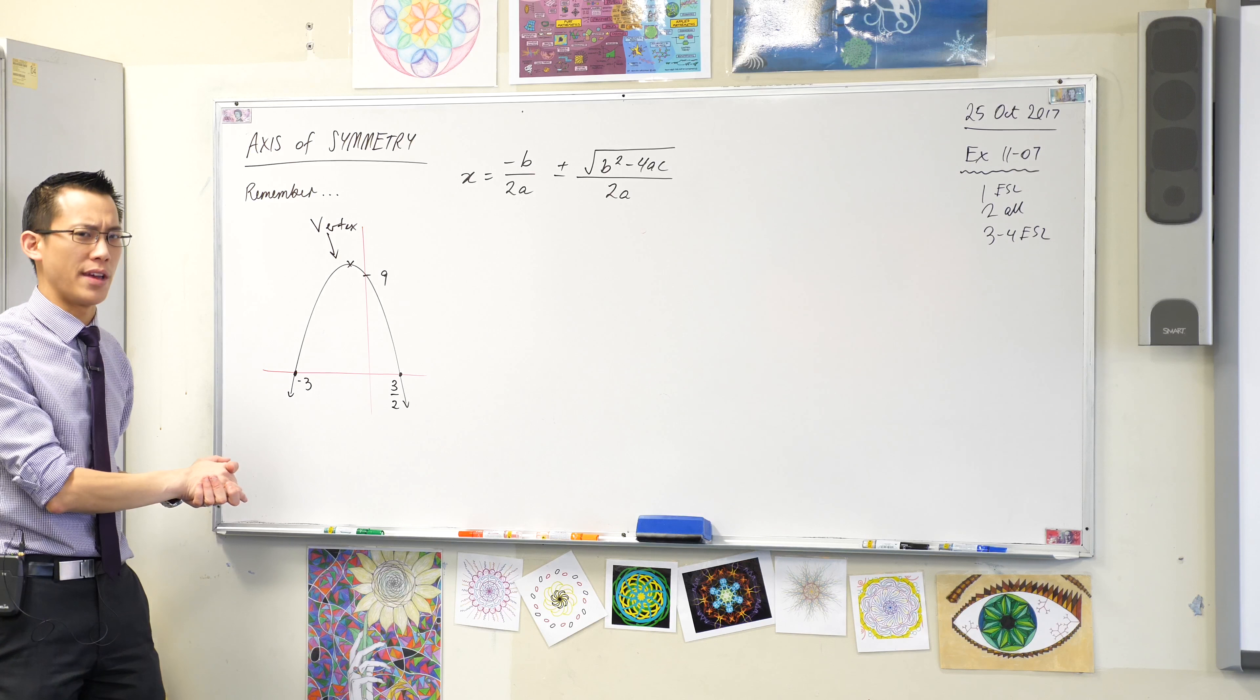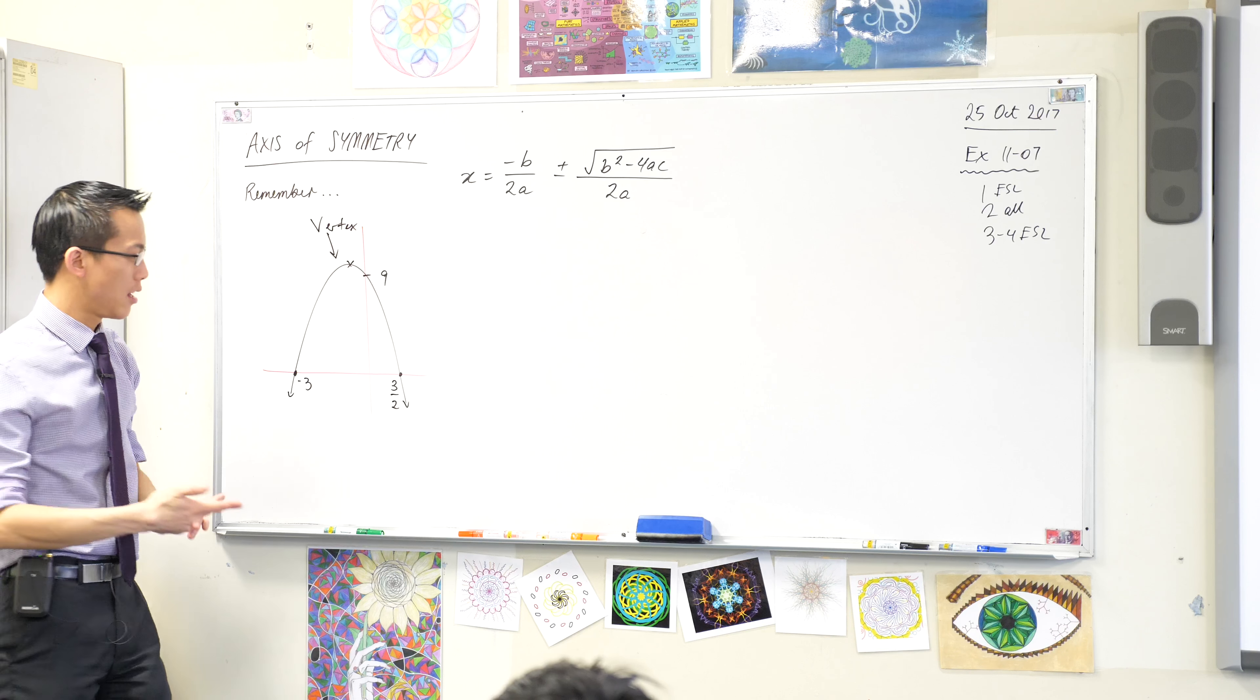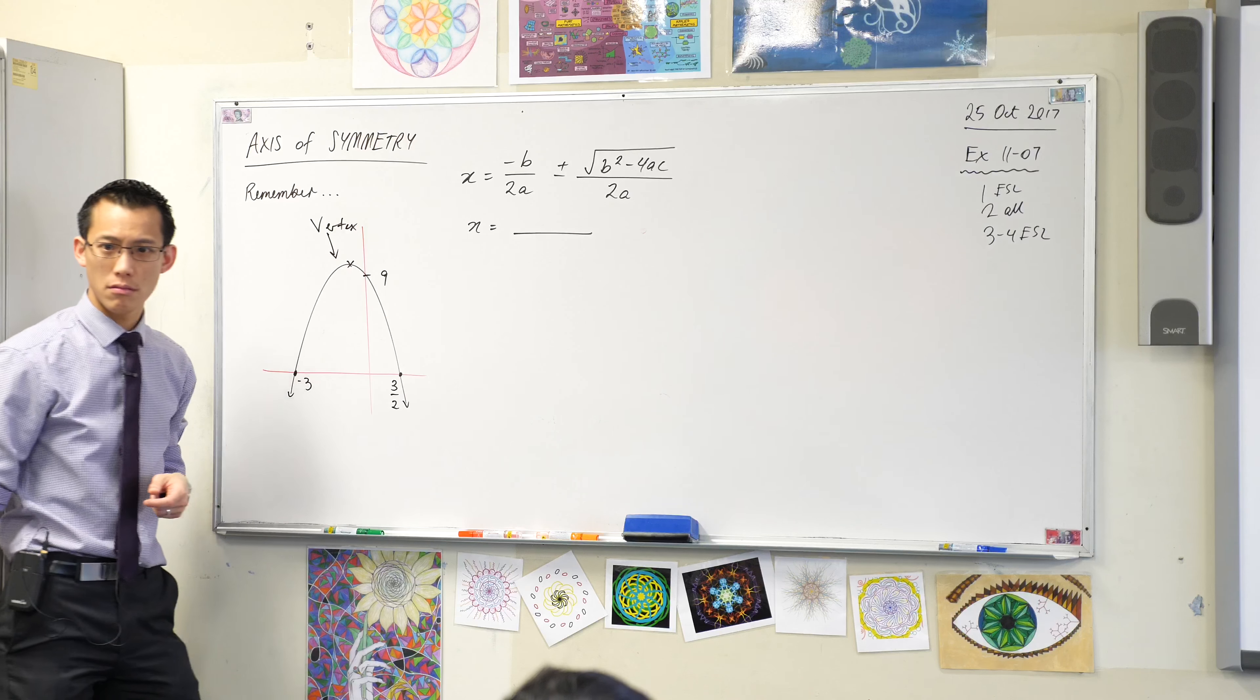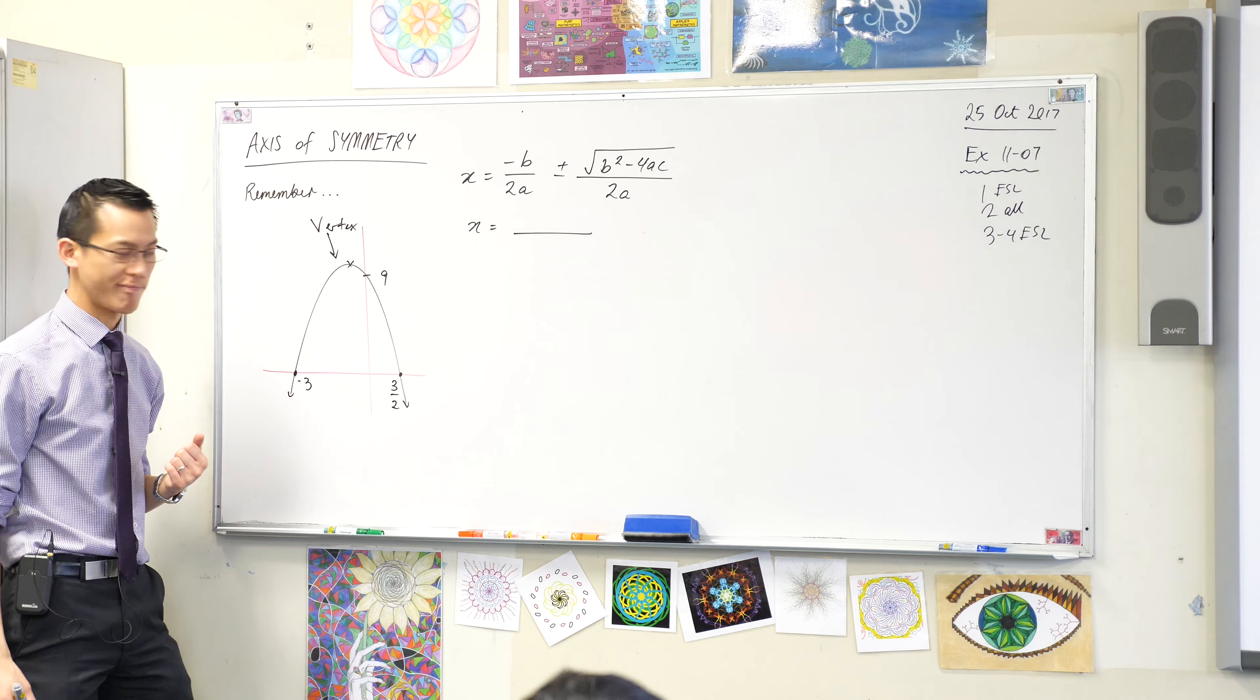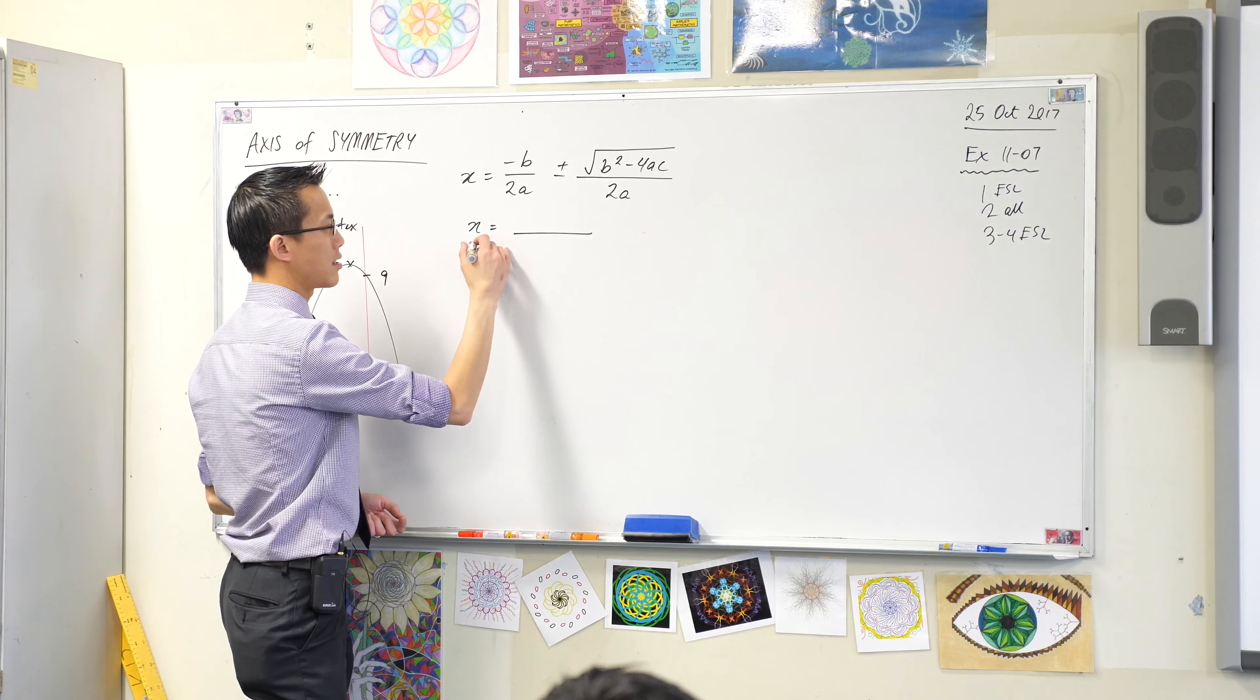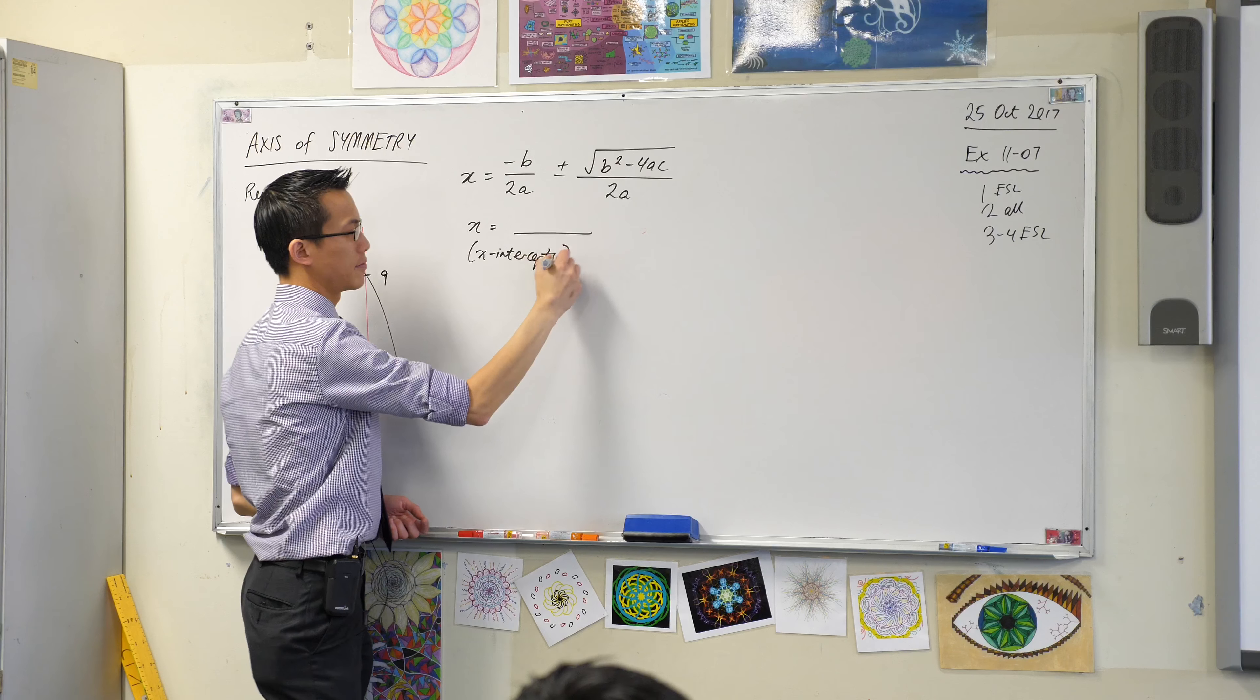If you went through this process, you put in A and B and C, you're going to get some stuff down the bottom. X equals something. What are those somethings? I've actually labelled them on here. What are the numbers? You're going to get these numbers. So, these give you the X intercepts.